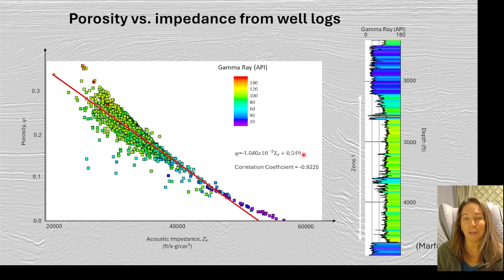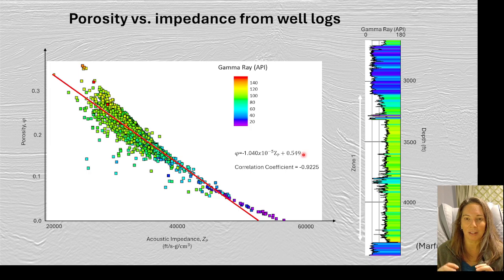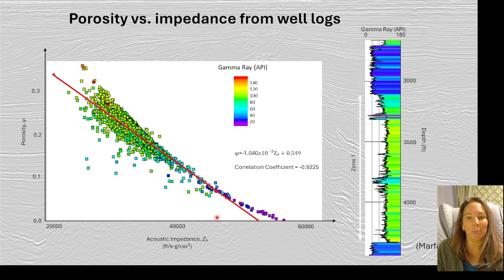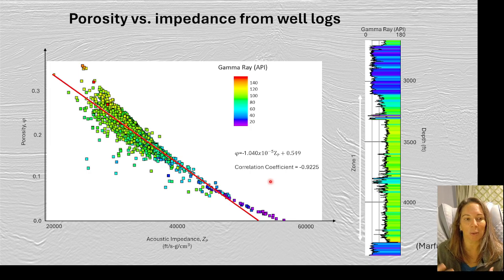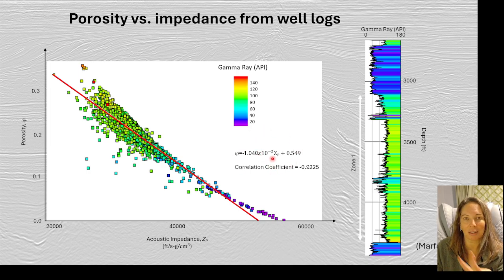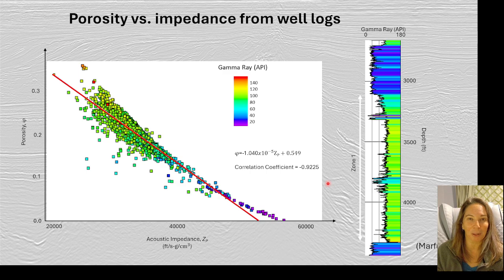Another practical application: if we have well logs with porosity information, we can calculate the acoustic impedance from the well logs and cross-plot them. There's a negative trend between porosity and acoustic impedance. We can take that trend line and, in a seismic volume where we have acoustic impedance calculated from our post-stack inversion, apply this trend line to the seismic data around the well to generate a pseudo-porosity volume from the seismic data. That's just one quick example of how we can use inversion results.